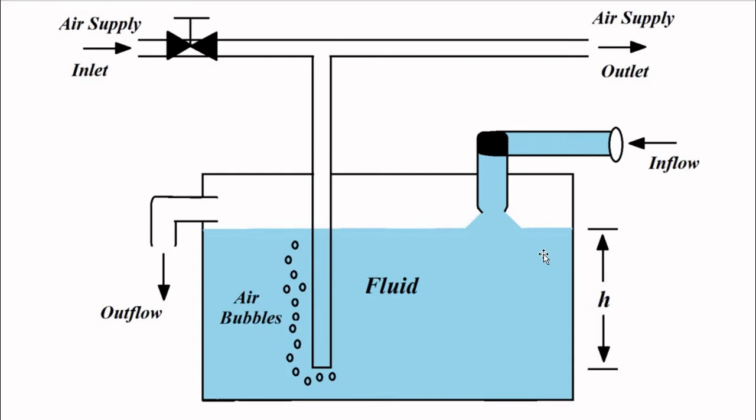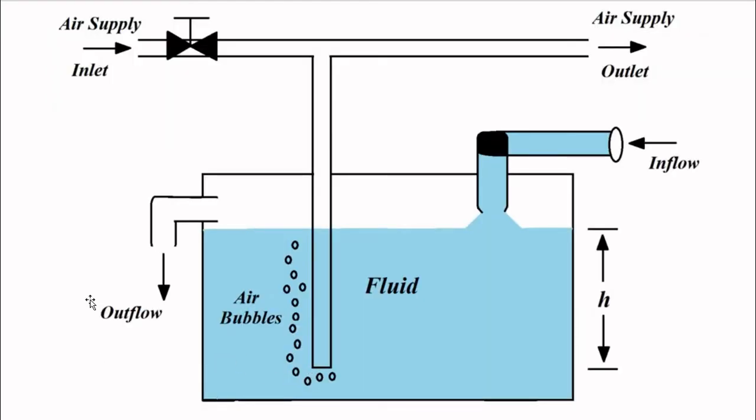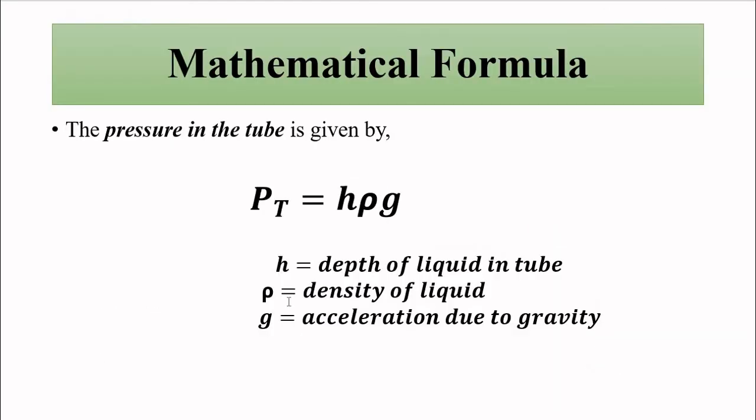Level sensors are there. Whenever level crosses upwards, an alarm is triggered and outflow and inflow are regulated so that the level in the container is fixed. So h is fixed, then acceleration due to gravity g is fixed. The only thing that controls the pressure in this tube is the density rho of the liquid.